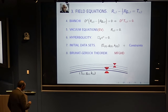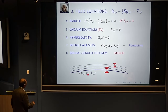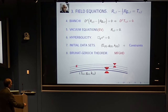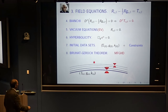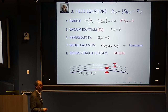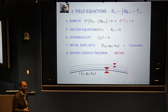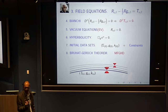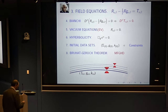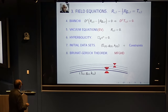What I call an initial data set consists of a three-manifold with a Riemannian metric and a tensor K₀ — which is in fact a second fundamental form — and these must satisfy some constraint equations. This is analogous to the Maxwell equations: you can prescribe the electric and magnetic fields initially, but you must also satisfy divergence conditions. Here similarly there are nonlinear constraints which must be verified.